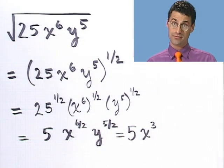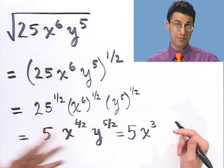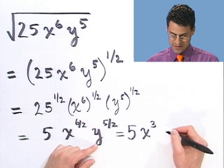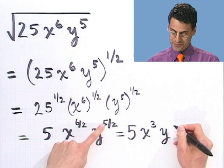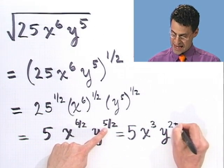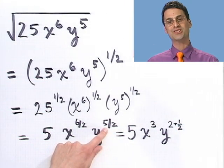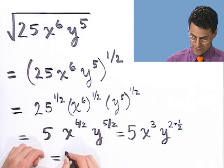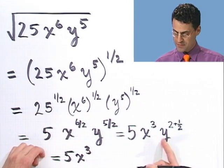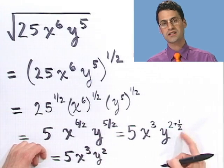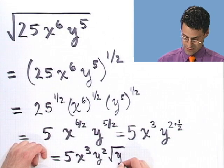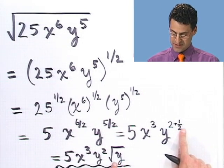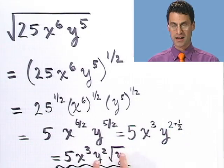Now, you can leave it as y to the 5/2 — I'd personally be happy with that. But another way to write it: rewrite 5/2 as 2 and 1/2. Using laws of exponents, adding exponents means multiplying, so this equals 5x cubed times y squared times y to the 1/2, which is the square root of y. It looks different but it's the same thing — y to the 1/2 times y squared, combined by adding exponents.